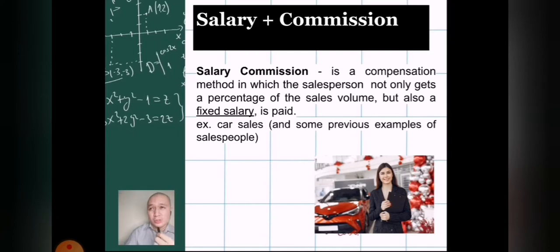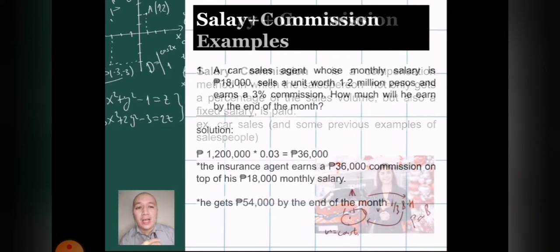I have several students, former students, who are now working for car dealerships like Mitsubishi, Toyota, etc. They have a basic salary and then on top of that they are earning commission. So they earn commission depending on how much they have sold and how many they have sold. That's a perfect example of a worker who works for salary plus commission.